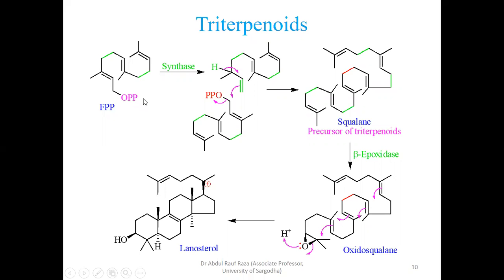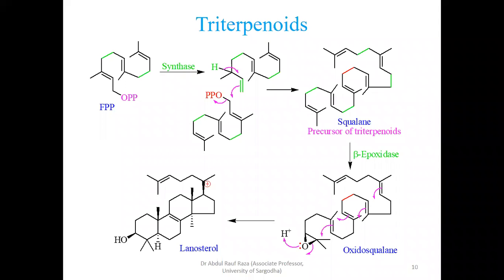GPP combined with another pyrophosphate unit to give farnesyl pyrophosphate. If this farnesyl pyrophosphate combines with another farnesyl pyrophosphate, it results in the formation of a 20-carbon containing system named GGPP in the literature. GGPP stands for geranylgeranyl pyrophosphate — two geranyl units are coupled with each other.